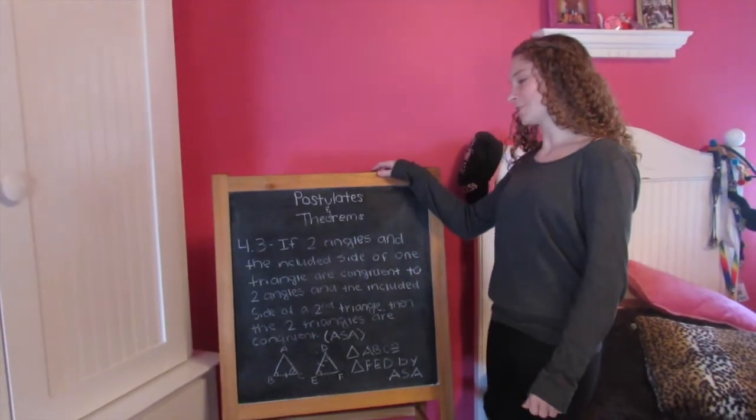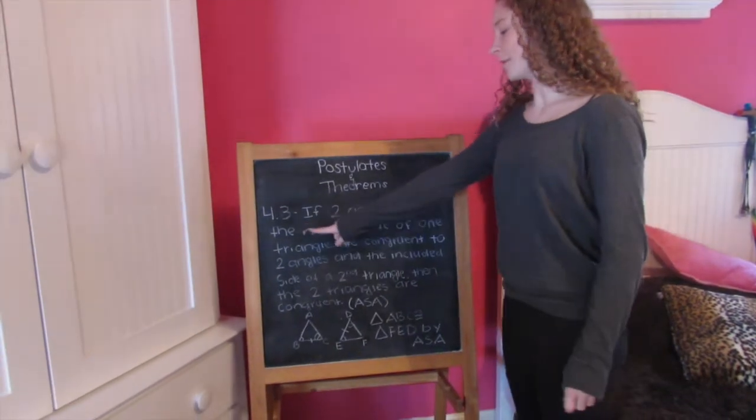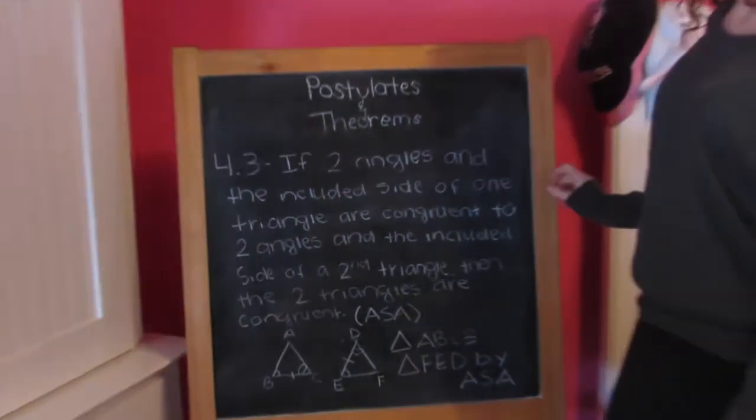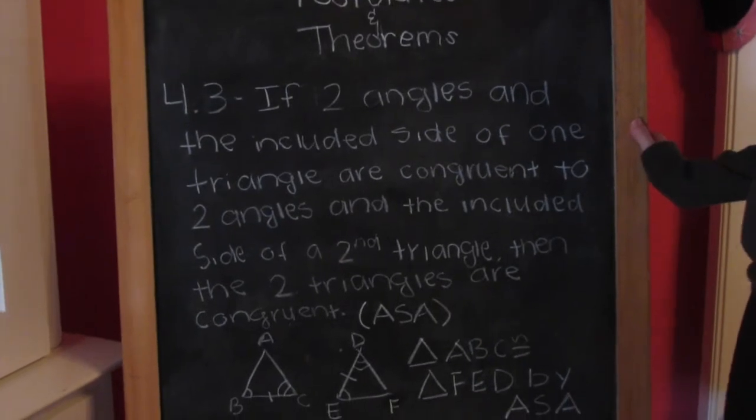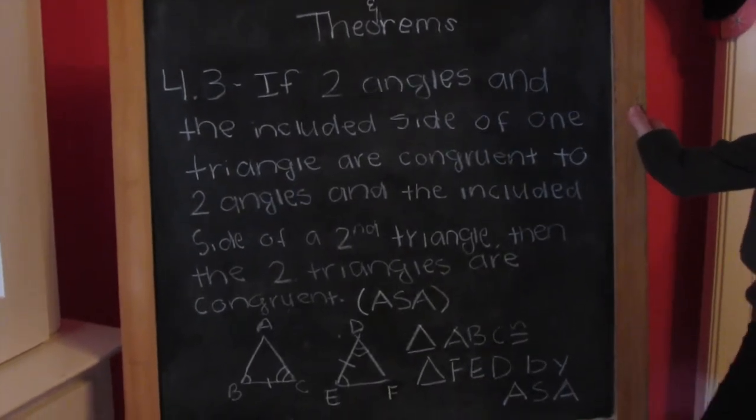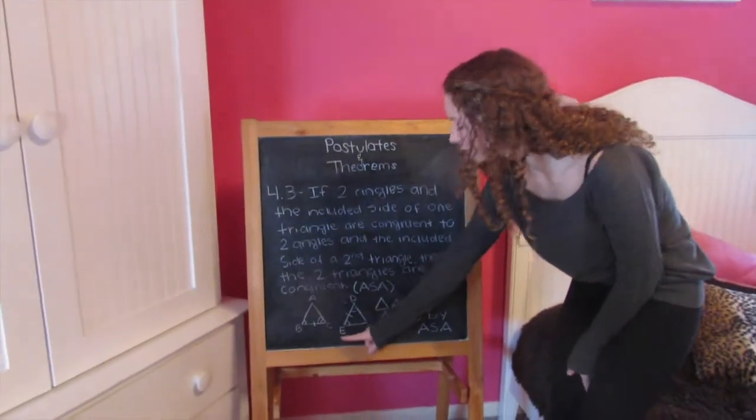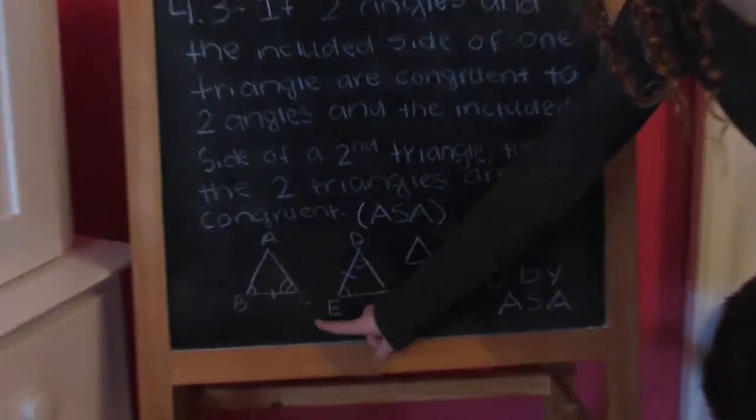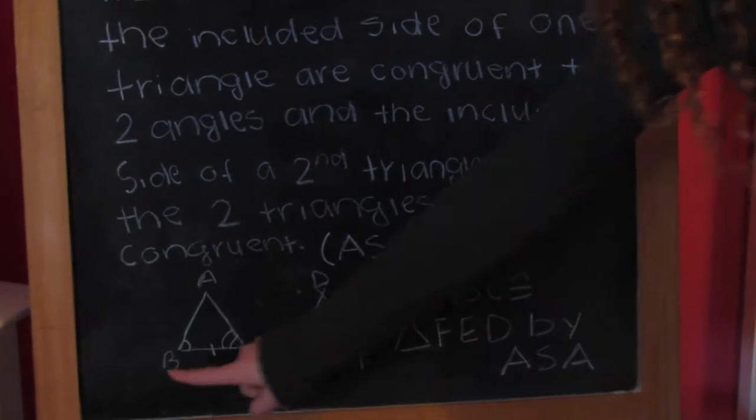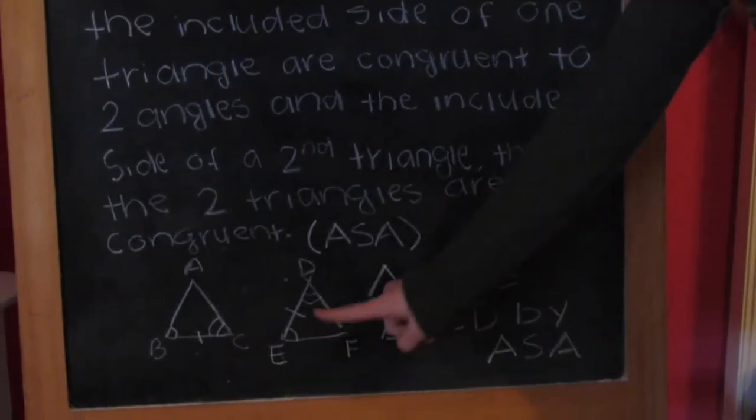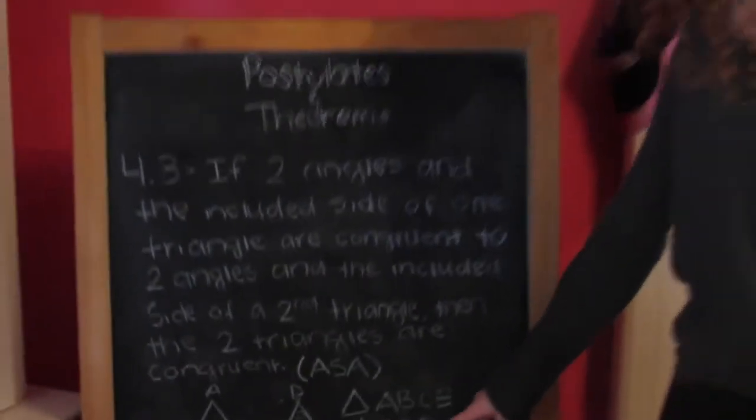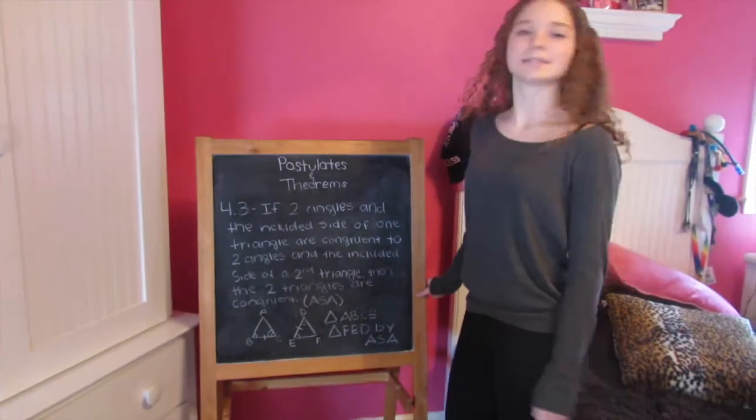Now onto the third postulate. It's postulate 4.3, and it states, if two angles and the included side of one triangle are congruent to two angles and the included side of a second triangle, then the two triangles are congruent. So as you can see here, angle B is congruent to angle E, angle C is congruent to angle D, and side BC is congruent to side ED. So that means triangle ABC is congruent to triangle FED by ASA.